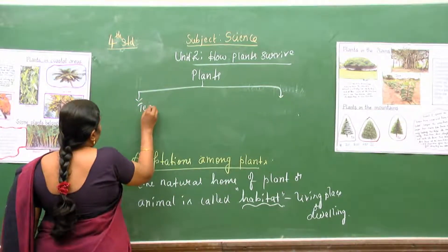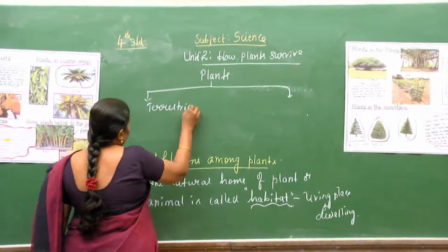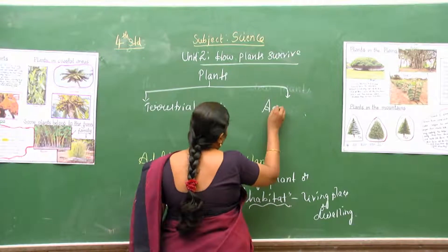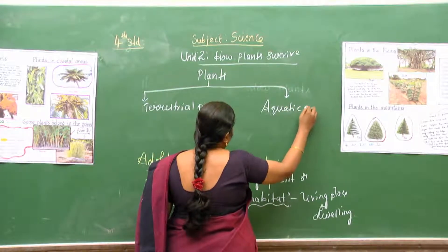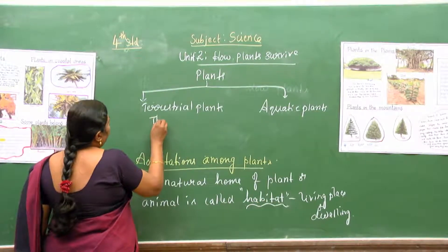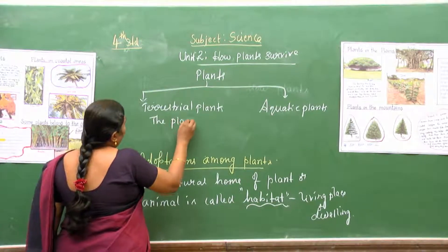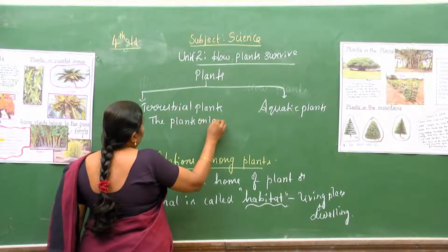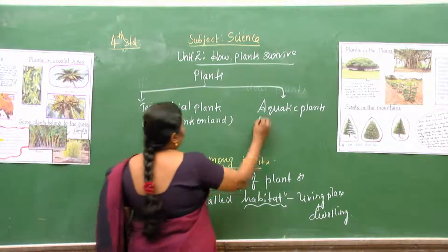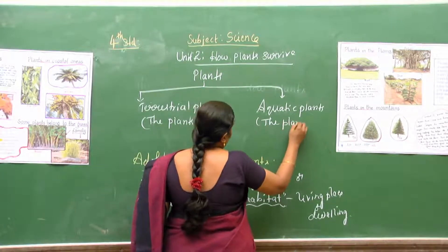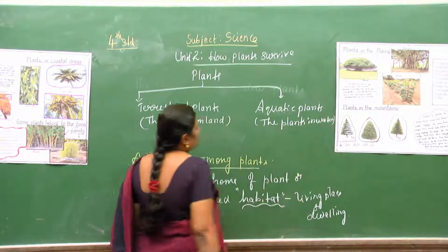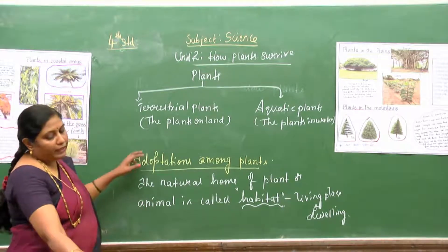Terrestrial plants are the plants that live on land. The plants in water are called aquatic plants.